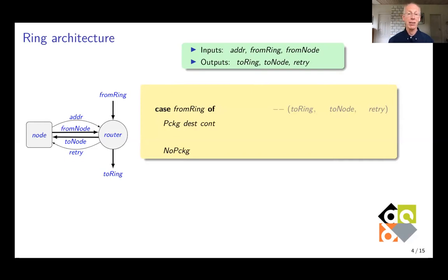So because the package from the ring has priority, we first have to look into that and that can be of two different forms. It can be a package with a destination and a content and it can be no package. In the case that it is a real package, we still have to check whether the package arrived at its destination address or whether it should move on to the rest of the ring. So you can now use the variable dest that was just introduced on the left hand side as a name for that field in the package and compare it to the address that is known to the router.